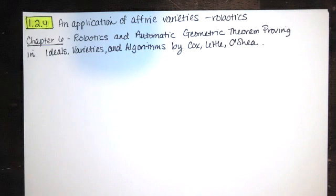There are many applications of affine varieties to robotics, and there's an entire chapter in this book devoted to it, Chapter 6, Robotics and Automatic Geometric Theorem Proving, from the book Ideals, Varieties, and Algorithms by Cox, Little, and O'Shea that I'm outlining for you in these videos.